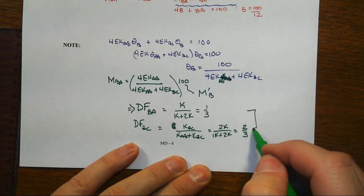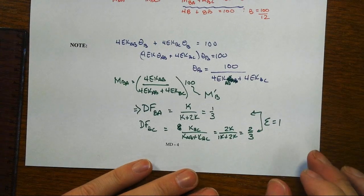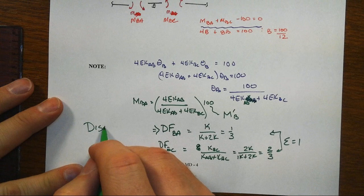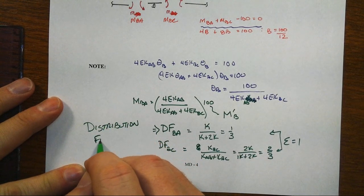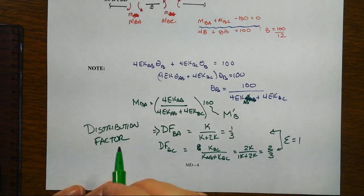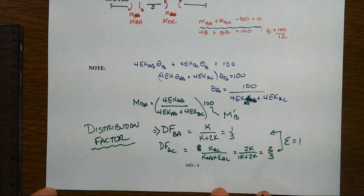These, of course, have to sum equal to 1 associated with all the members that frame into that joint. And that's your distribution factor, that whatever is happening at the joint gets distributed according to relative stiffness of the members that frame into that joint. That is a really key principle.